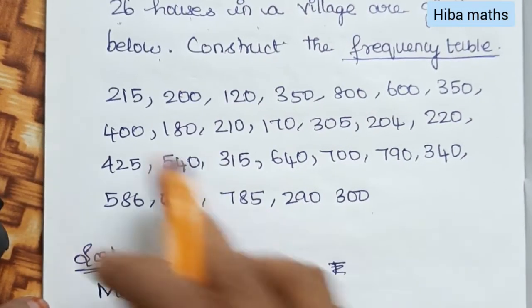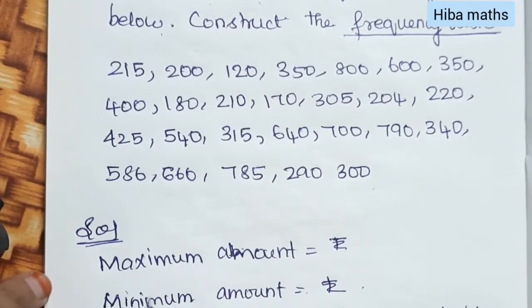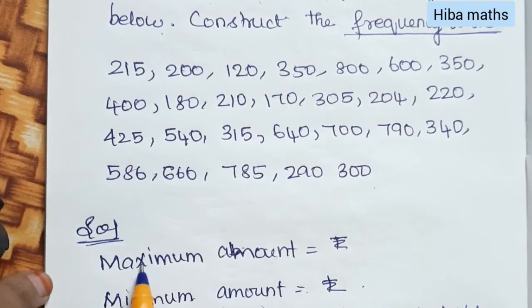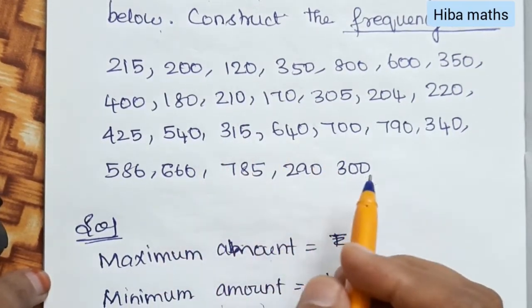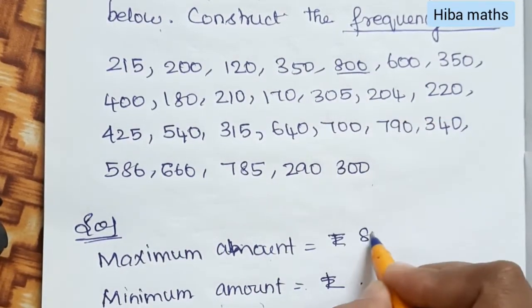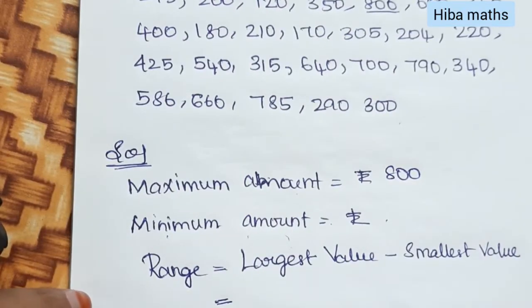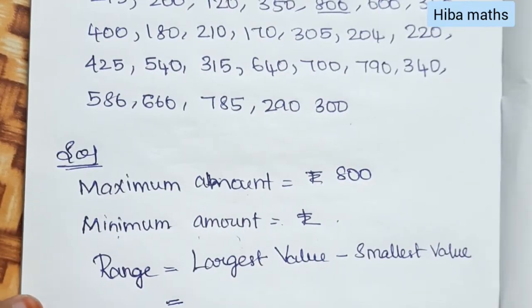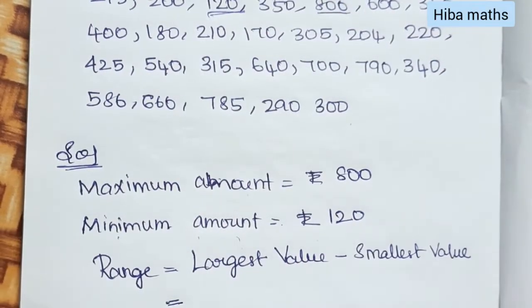The first step is to find the maximum amount and minimum amount. The maximum amount is 800 rupees — that is the highest current bill. The minimum amount is 120 rupees — 120 is the minimum.